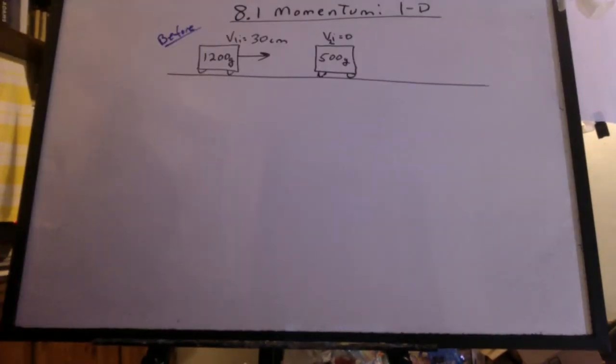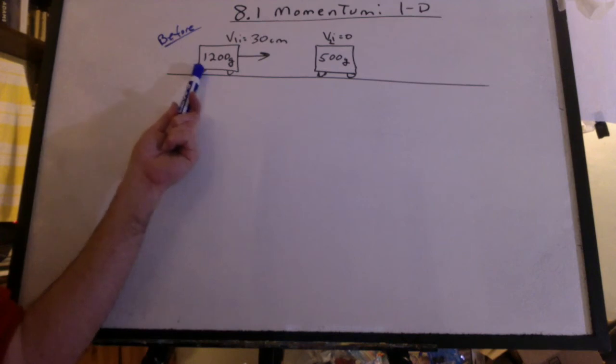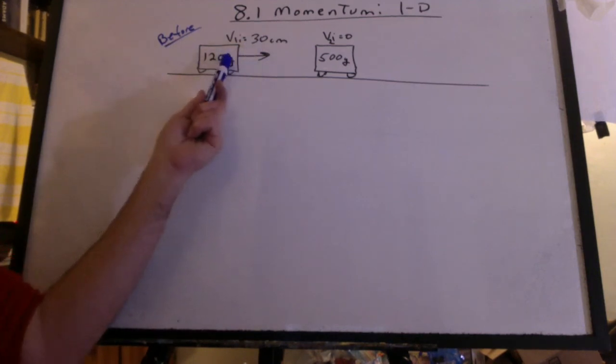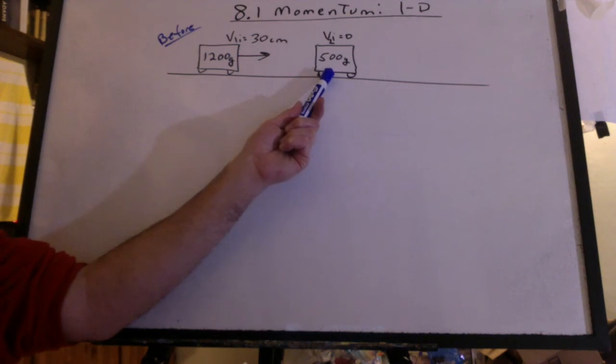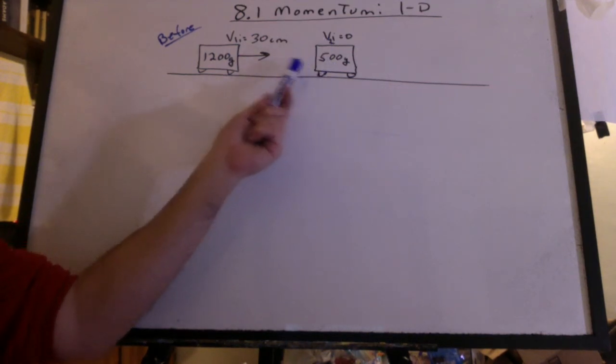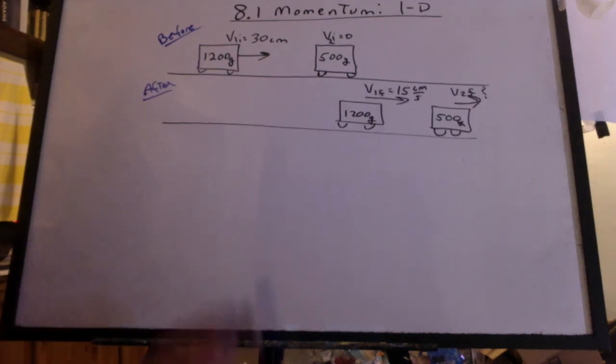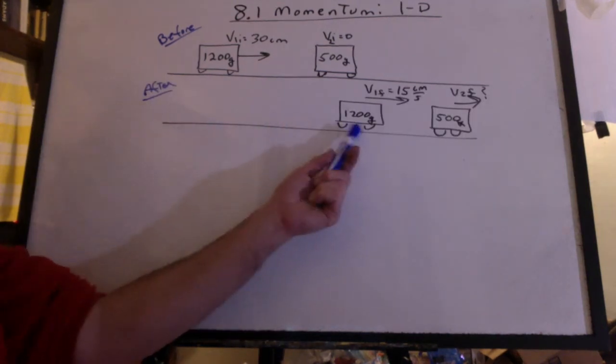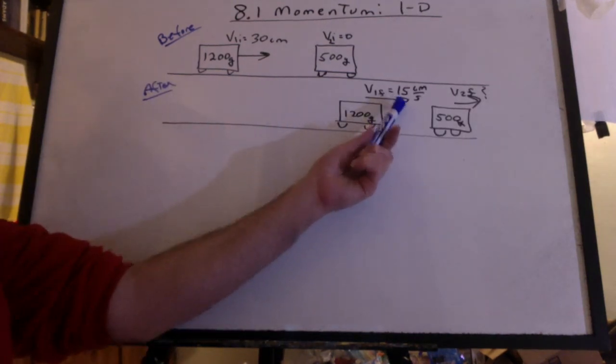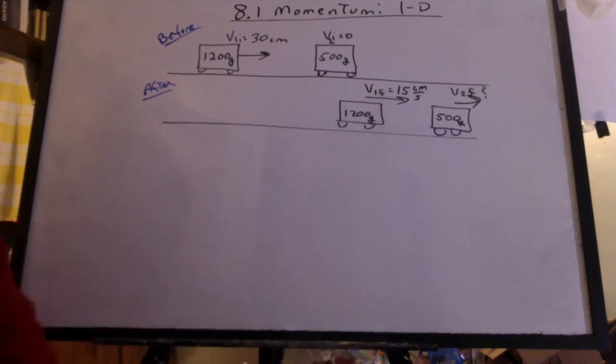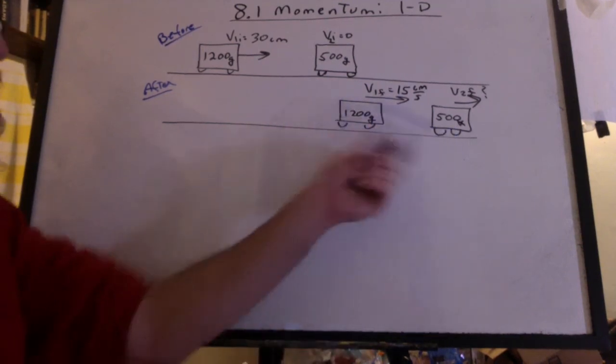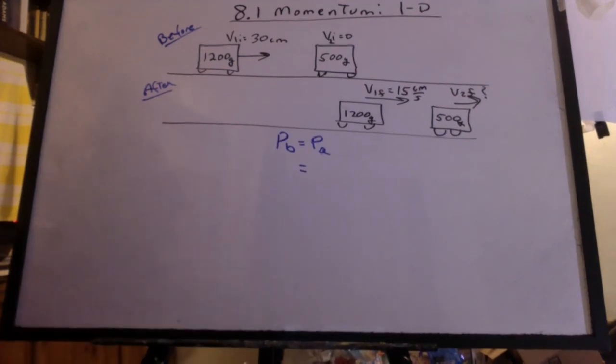Well, imagine this example. We have a 1200 gram cart at 30 centimeters per second smashing into a 500 gram cart at rest, but there's no Velcro and there's no spring. So for the after picture, let's say this cart is moving at 15 centimeters per second. And now we want to know what this cart is doing. Since these are internal forces, we'll use conservation of momentum.